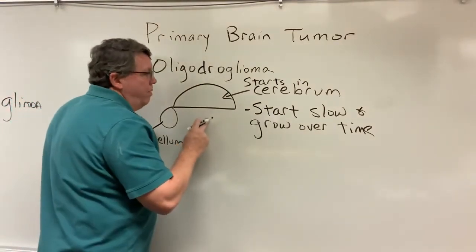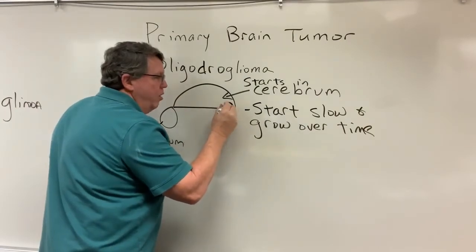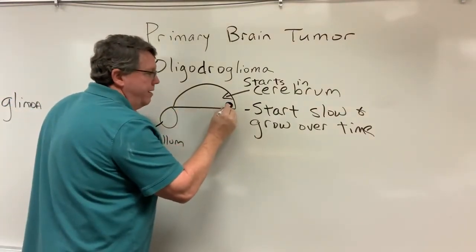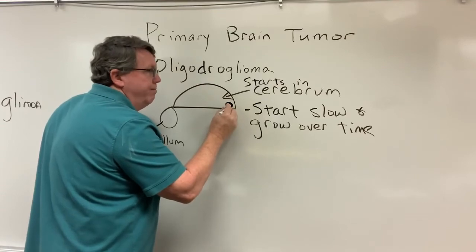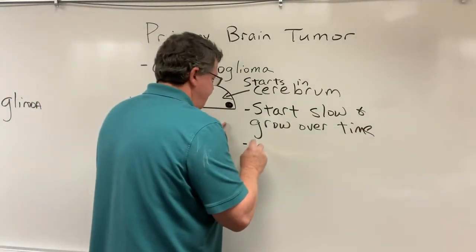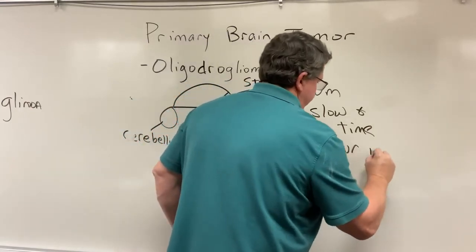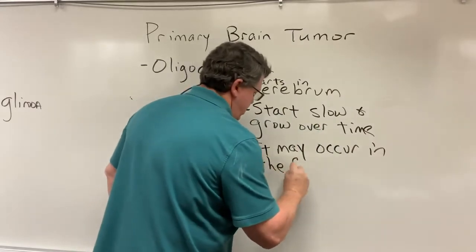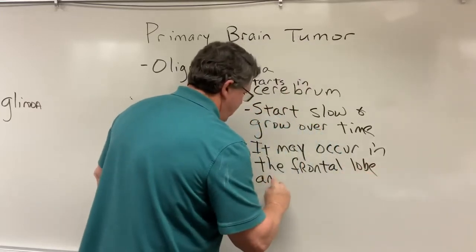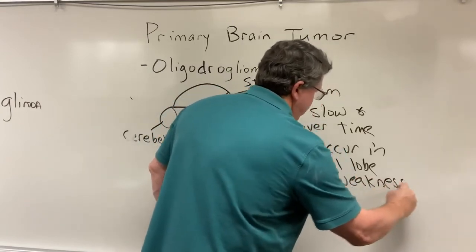For the most part these are going to occur somewhere in the frontal lobe. This is the back of the head and this would be the front — this is the frontal lobe. And when it does that it can cause weakness on one side of the body. So it may occur in the frontal lobe and cause weakness on one side of the body.